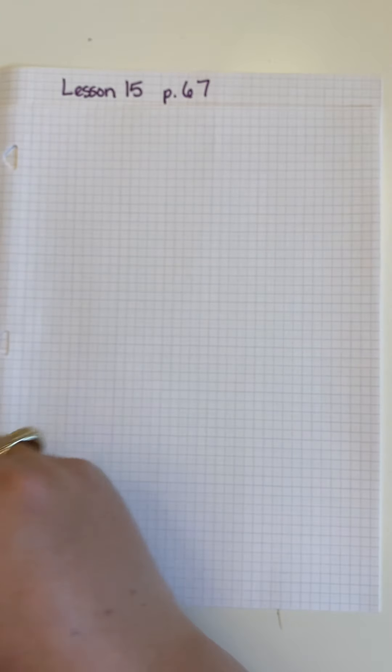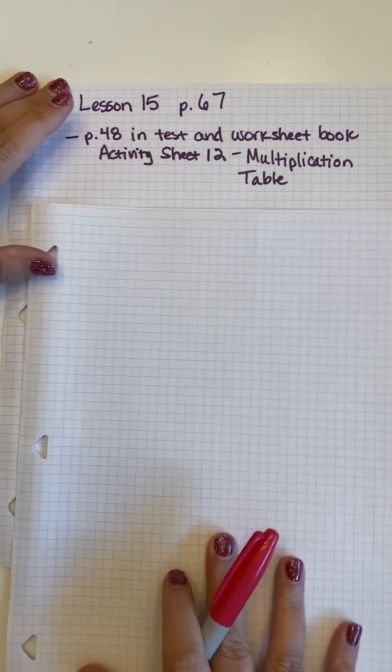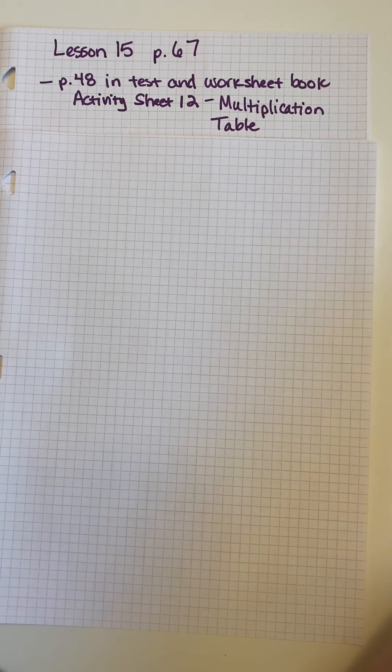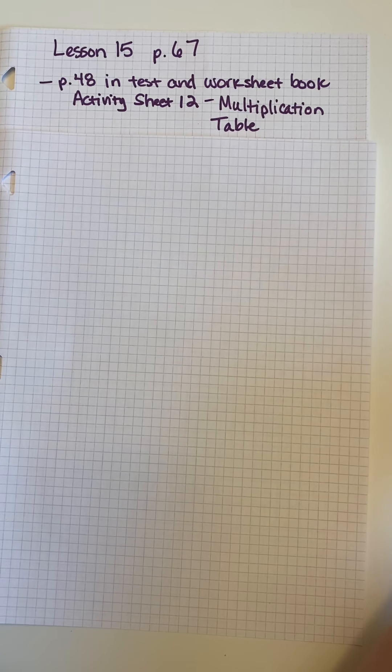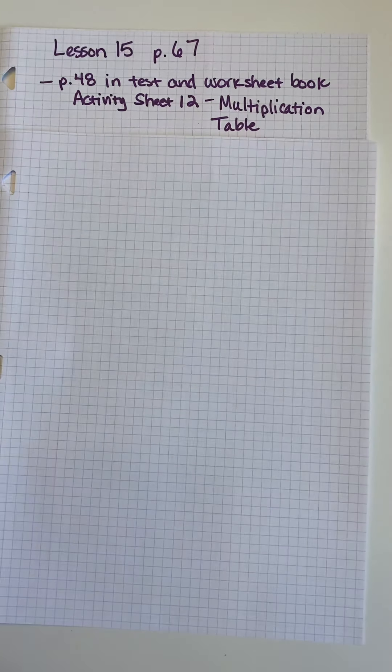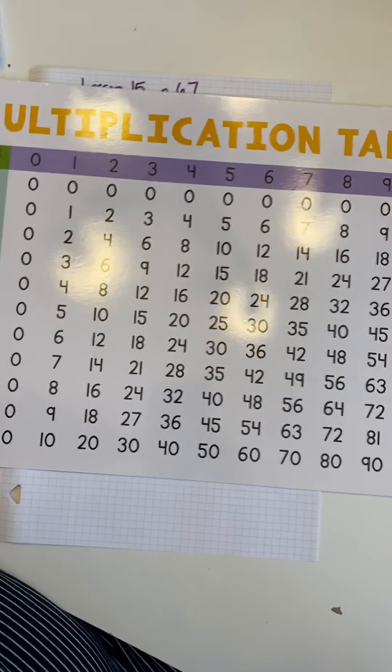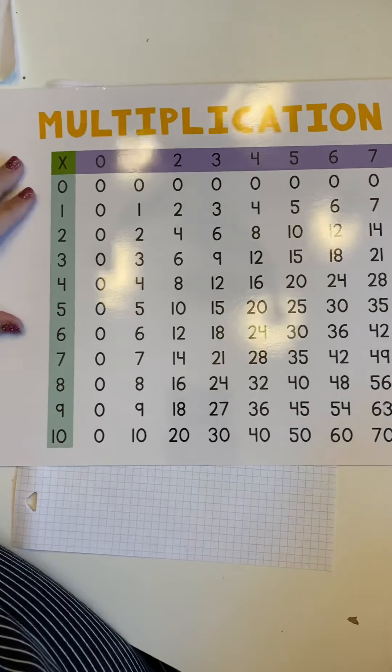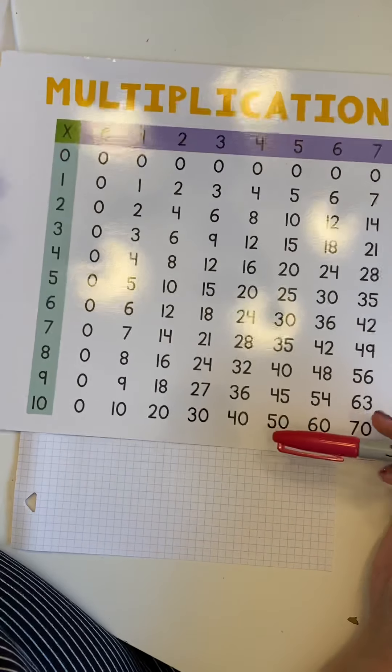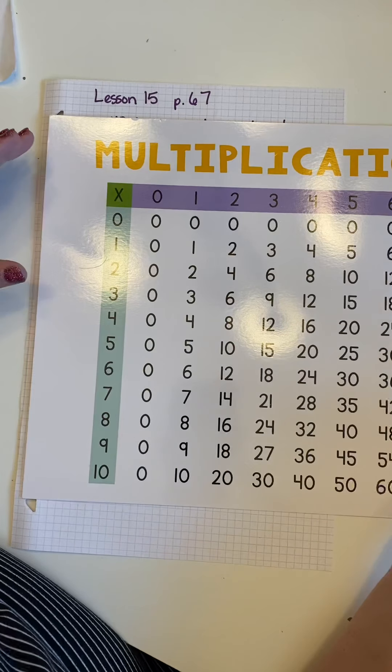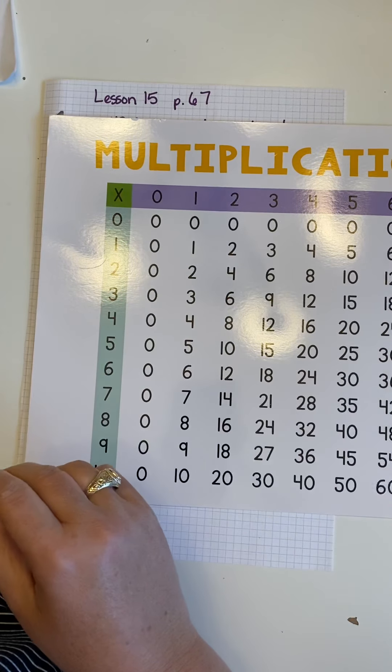Okay, the lesson 15 in your textbook is about making a multiplication table. It tells you that on page 48 in your test and worksheet book, there is basically a blank to fill out for a multiplication table. If you know your multiplication facts, you don't need to do that. Basically, it will give you a version of a multiplication table. This is one I have that goes, and so for those of you who don't know how to use a multiplication table and might need to, we're going to learn how to do that real quick.